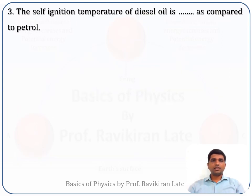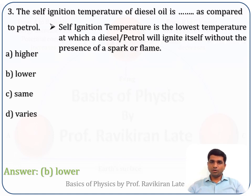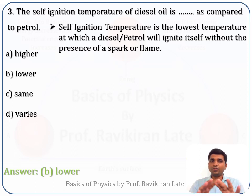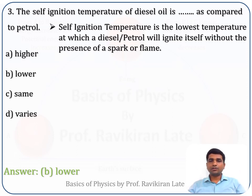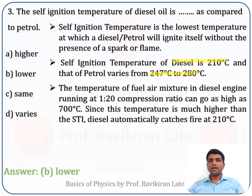The third question: the self-ignition temperature of diesel oil is — compared to petrol: higher, lower, same, or varies. The answer is lower. Self-ignition temperature is the lowest temperature at which a fuel ignites without an electrical spark. For diesel it is 210 degrees Celsius, whereas for petrol it varies from 247 to 280 degrees Celsius. So diesel has a lower self-ignition temperature.